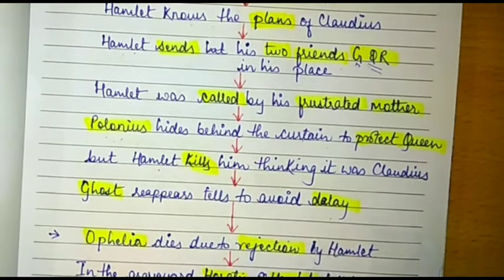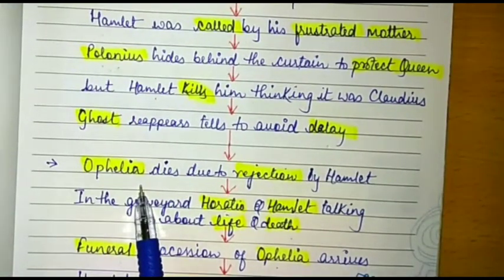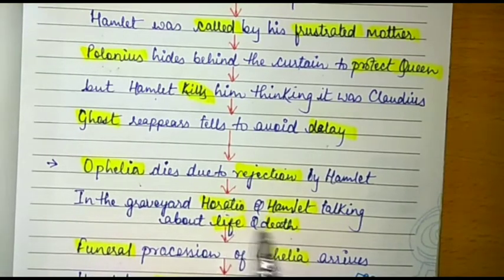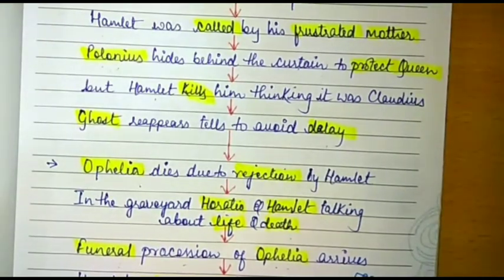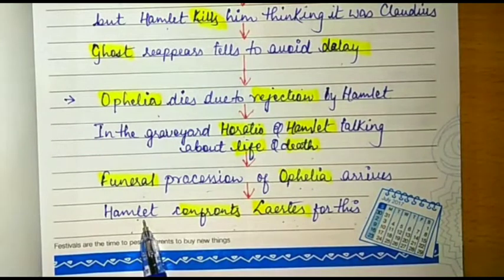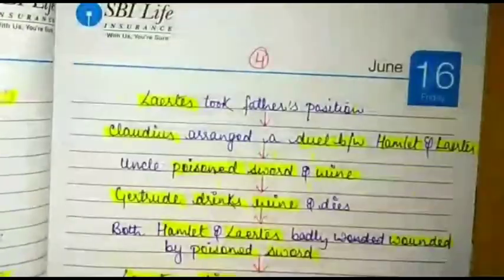The ghost again appears and tells Hamlet not to delay the murder of Claudius. In the next scene, Ophelia commits suicide by not eating food, lost in the memory of Hamlet, and this is how she dies. At the graveyard, while Horatio and Hamlet were talking about life and death, the funeral procession of Ophelia arrives. Hamlet confronts Laertes for this — Hamlet had loved Ophelia but was pretending he did not, so he felt bad and blamed Laertes for her suicide.